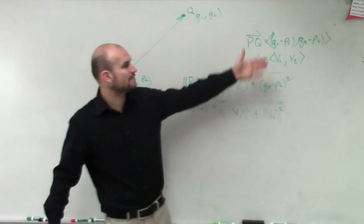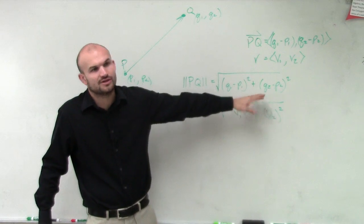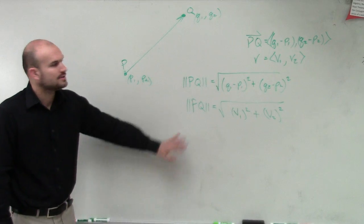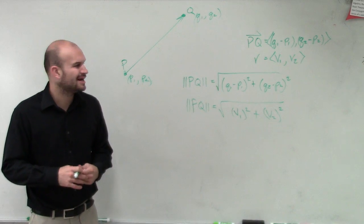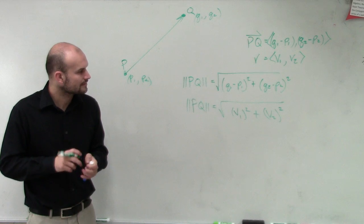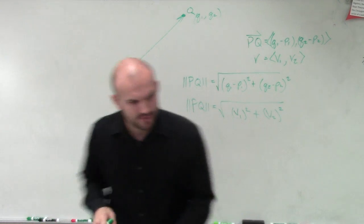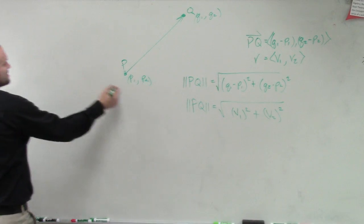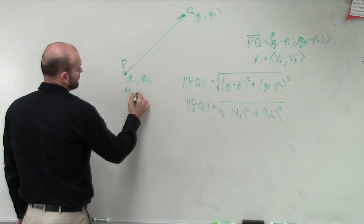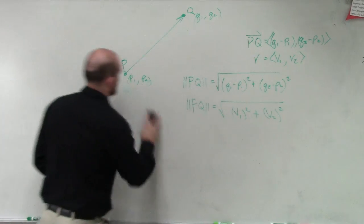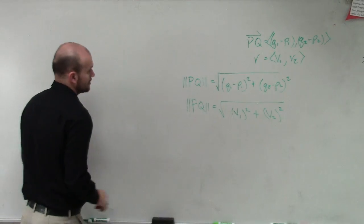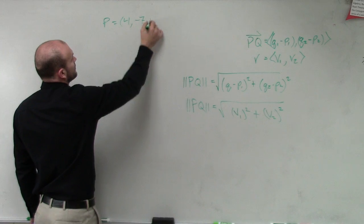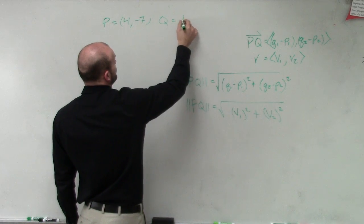So you don't have to go from here converting it to component form and then find the magnitude, because when you plug it in, you already are converting it to your component form and then find the magnitude. Let's do a problem. Let's do 4, negative 7, negative 1, 5. So let's say we have P is equal to 4, negative 7, and Q is equal to negative 1, 5.